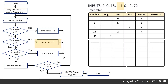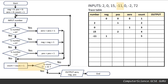So our next action: we're going to assign neg the value of itself plus one. So zero plus one is one. Count is going to be itself plus one — count four plus one is five. Is count equal to eight? No, it's five. Round we go again onto our next input.